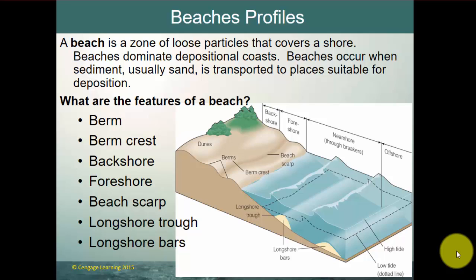The back shore is up against the dunes; the foreshore separates the back shore from the actual water. The near shore contains the breakers, and offshore is beyond where the breakers are. Wave action creates berms, berm crests, and beach scarps along the beach — the beach scarp is where high tide comes up to and erodes, leaving a small cliff in the sand. The water pulling sand back creates longshore bars.